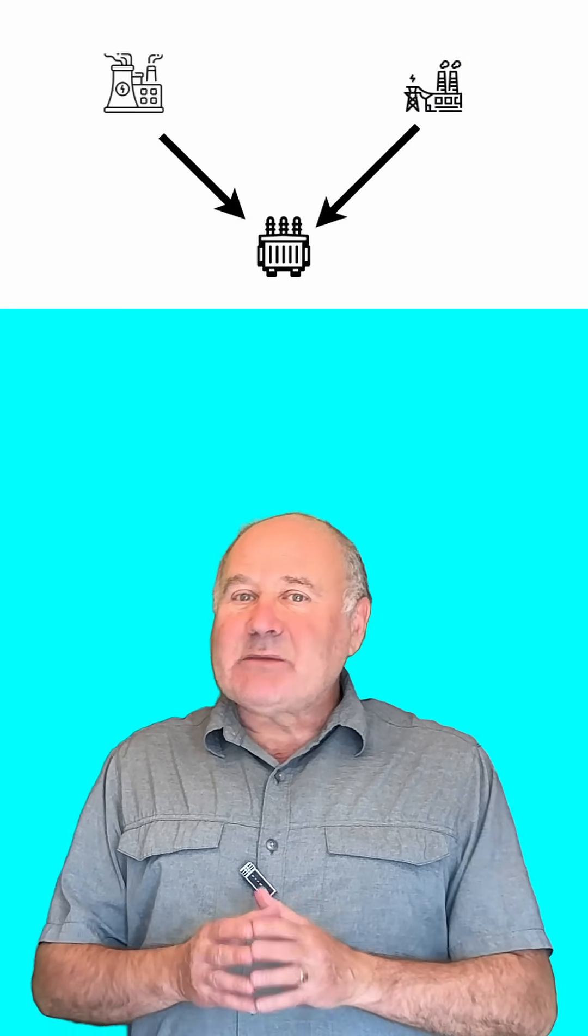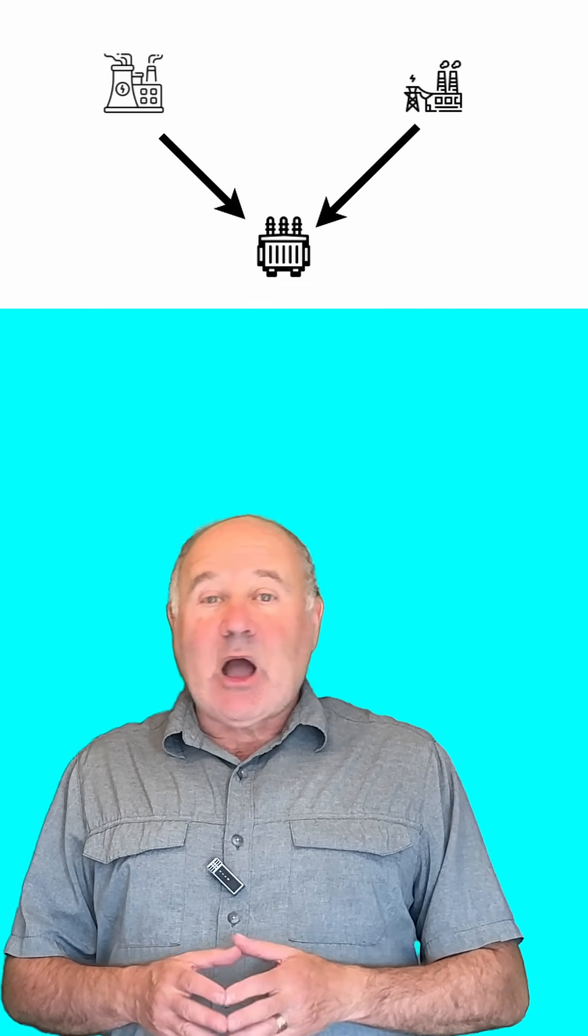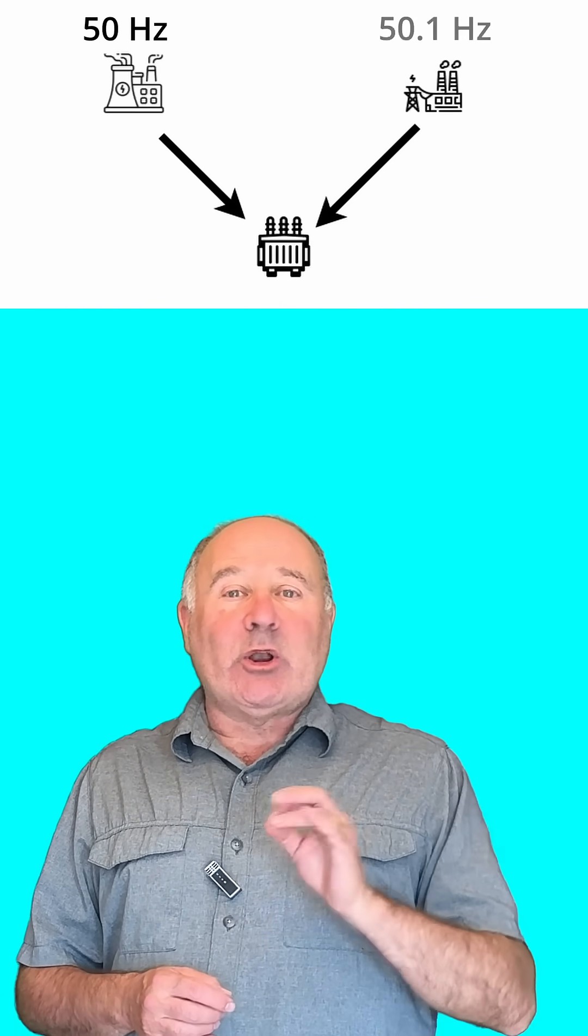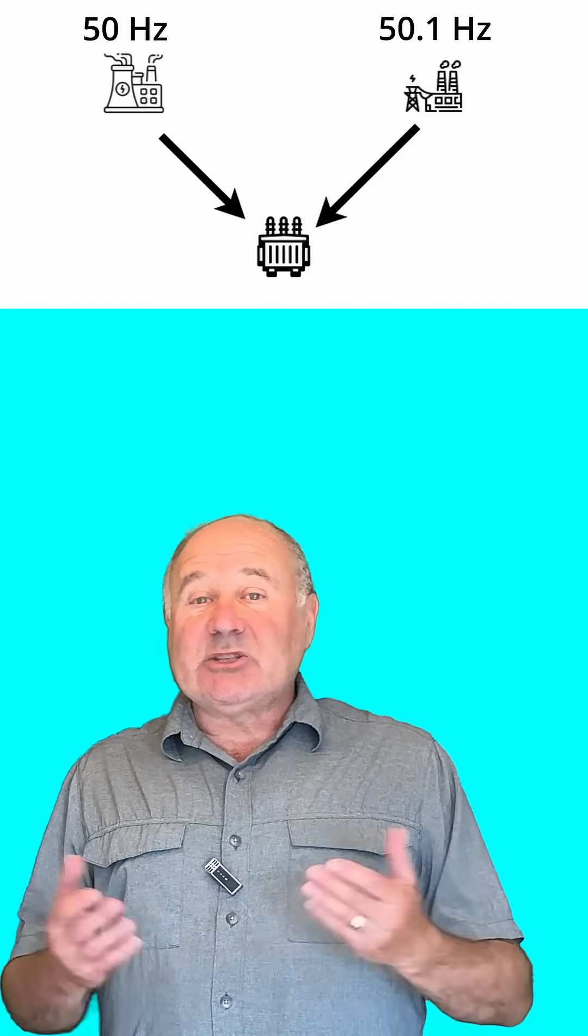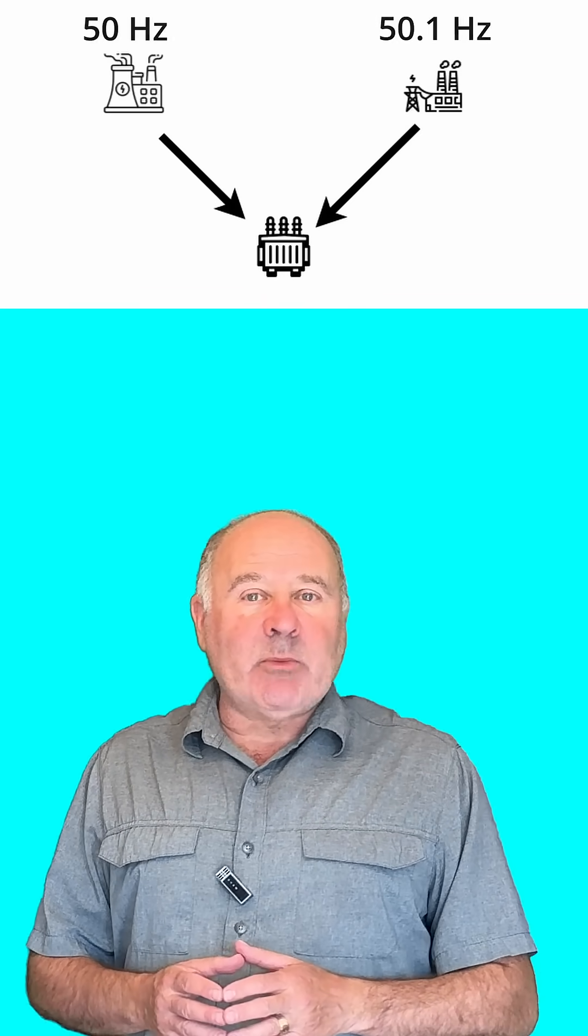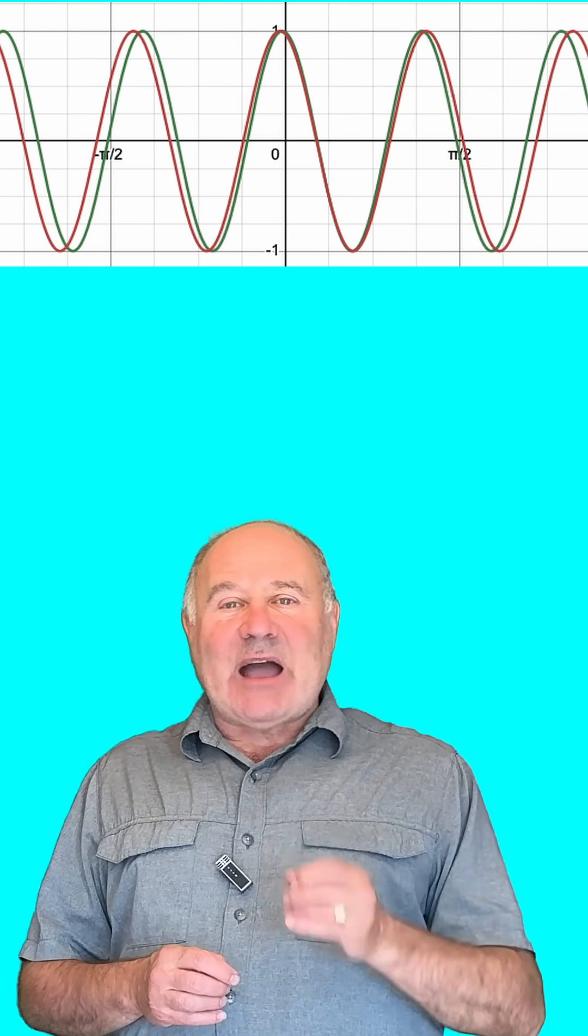So, knowing that, let's imagine what would happen on a grid where there were two generators, one operating at 50 hertz and the other operating at 50.1 hertz, and a substation that serves a city between the two generators. At some moment in time, they both have the same voltage.